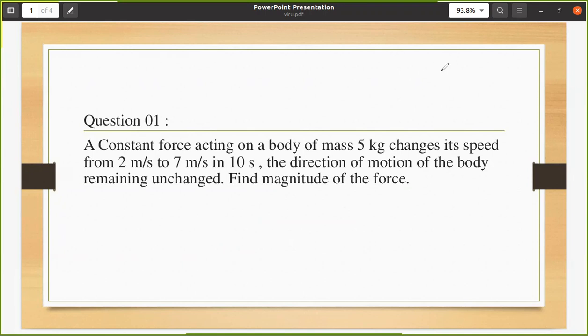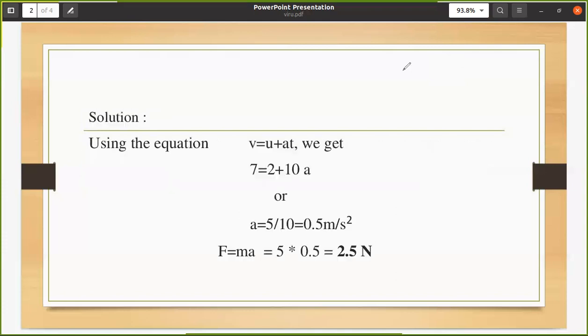You can easily figure this out because we need to find acceleration. They have given the initial velocity, final velocity, and time taken. They have given u, v, and t, and we need to find a. When choosing the equation from linear motion equations, search for the equation with these four variables: v, u, a, t. There is only one equation with these elements: v equals u plus at.